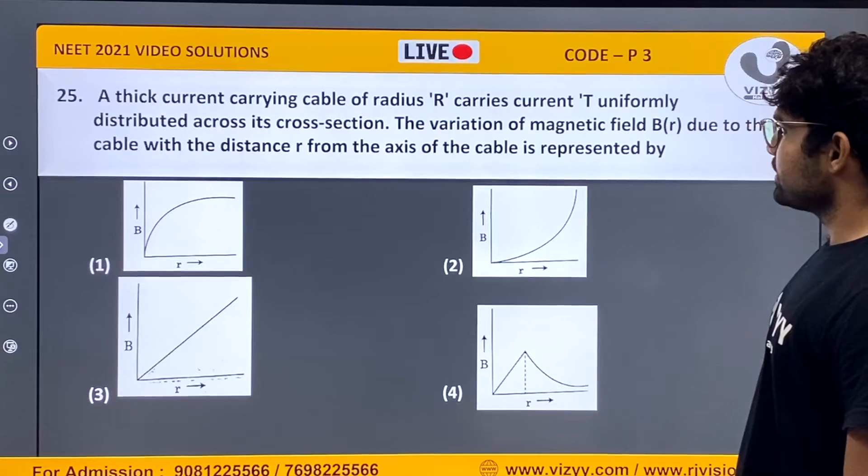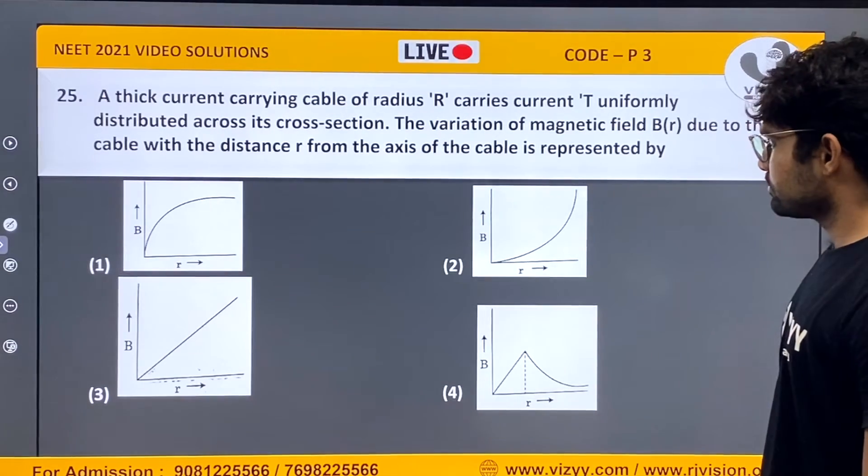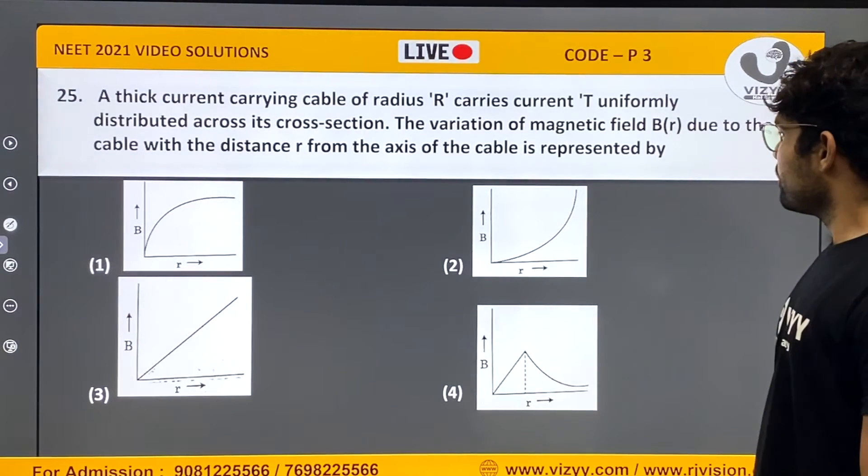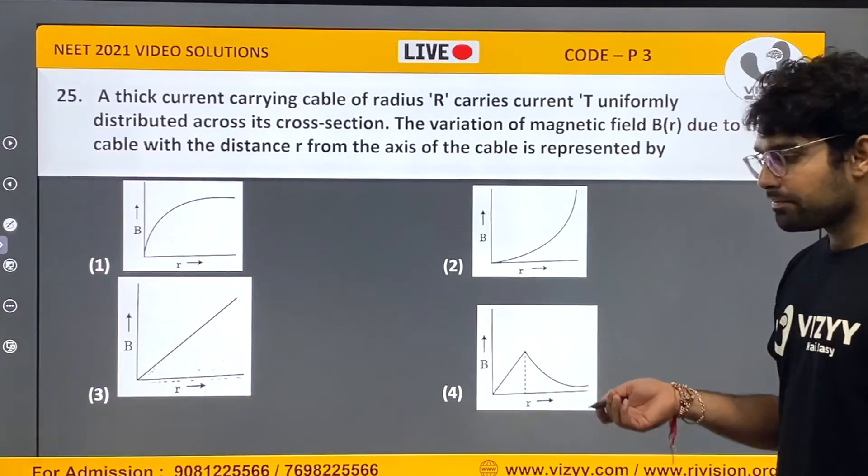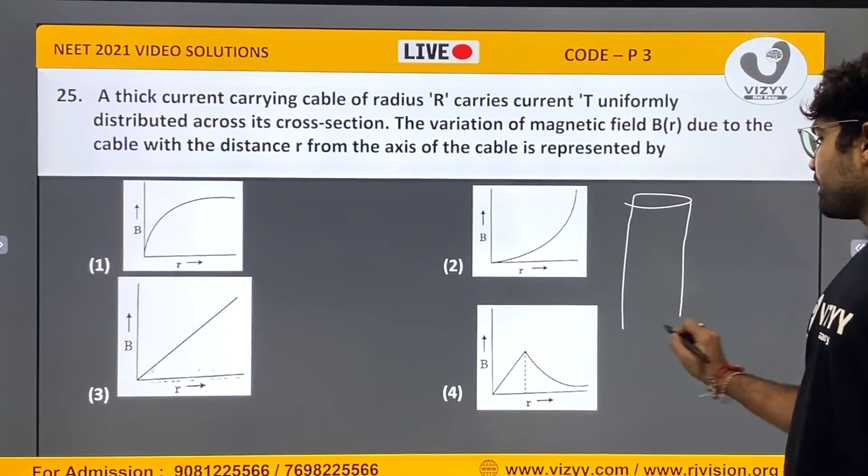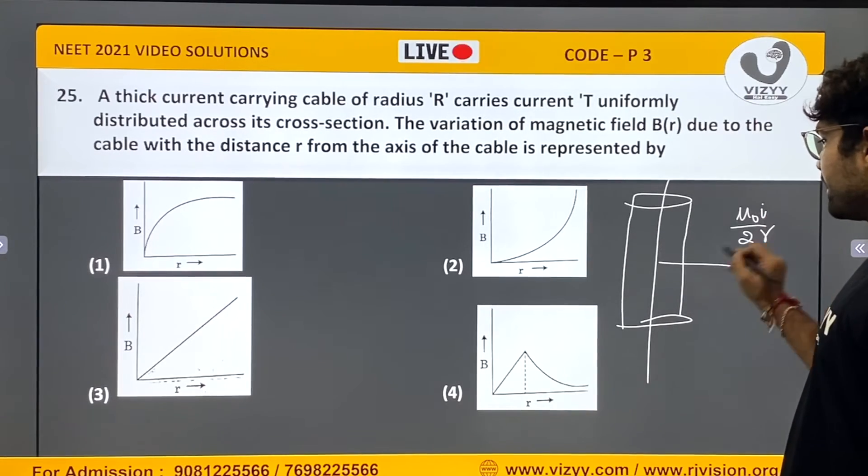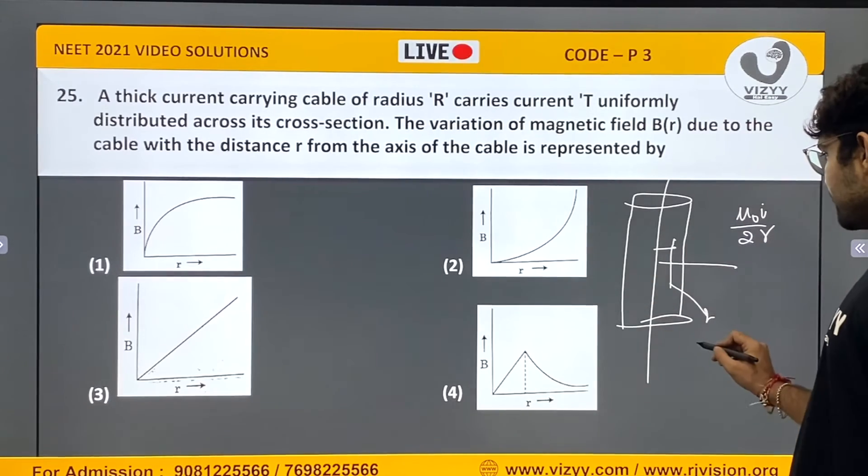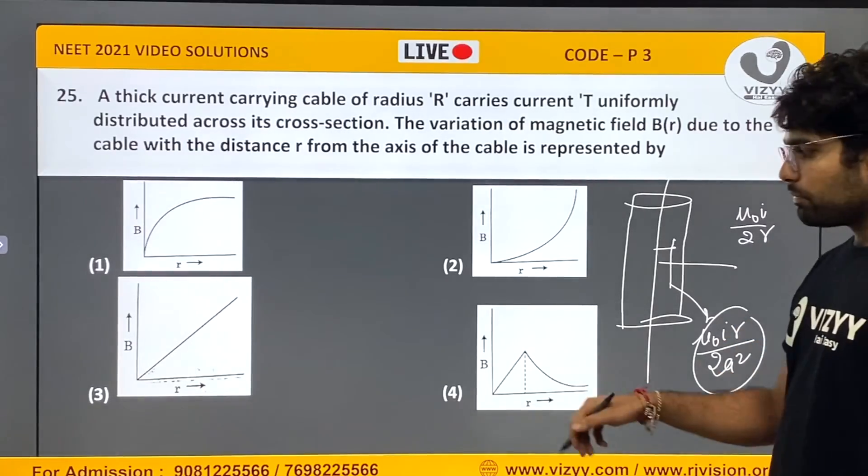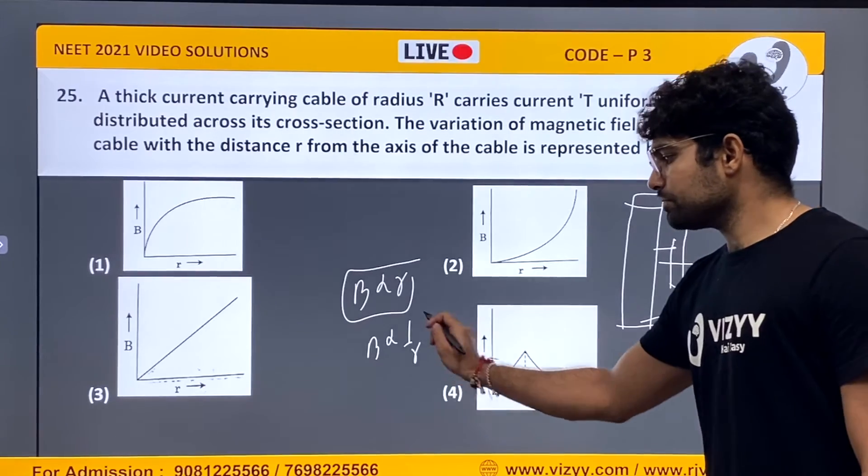A thick current carrying cable of radius R carries current I uniformly distributed across its cross section. The variation of magnetic field due to cable with distance R from cable is represented by. You can see the current carrying wire, outside the wire which is mu_0 I upon 2 pi R. Whereas inside the wire which is mu_0 I R upon 2 pi R squared.